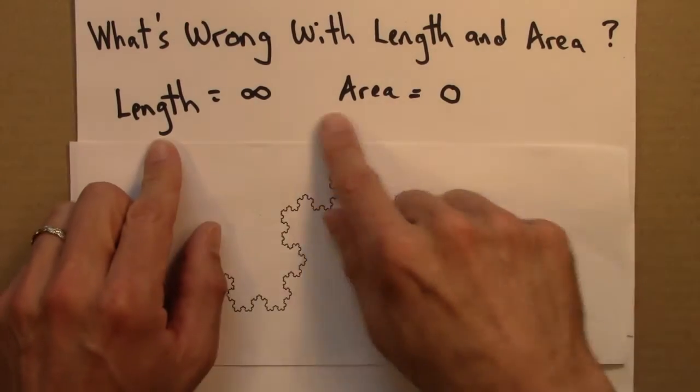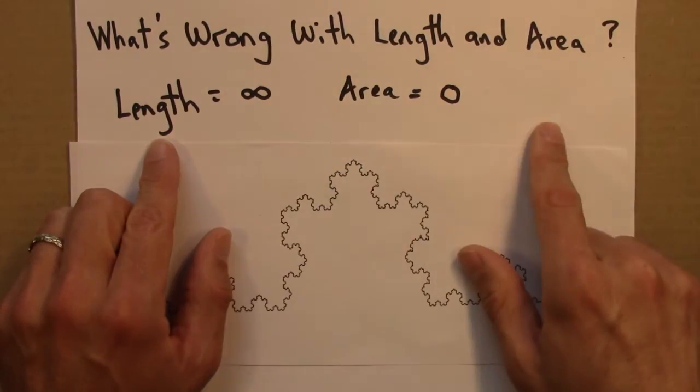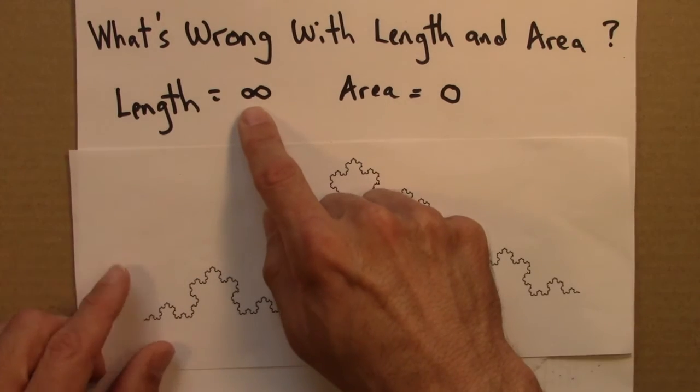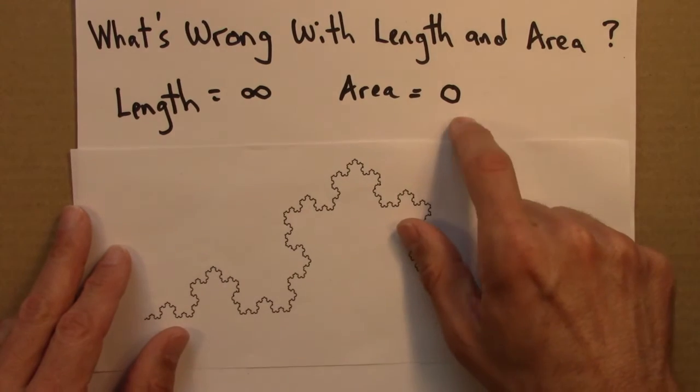And so this situation is pretty unsatisfactory. We want to be able to do more than just say, well, if you think about it as a line, it's infinite. If you think about it as an area, it's zero.